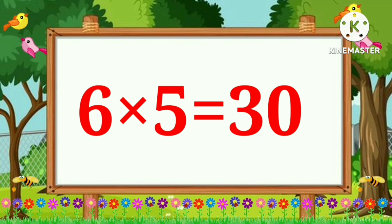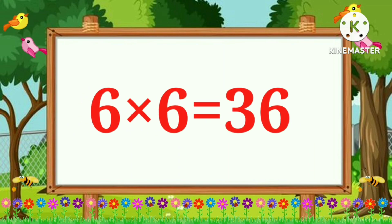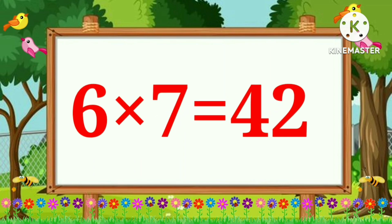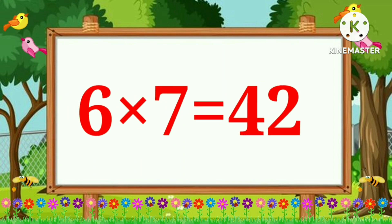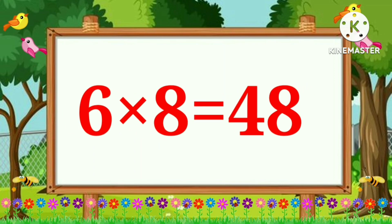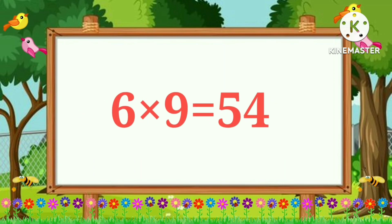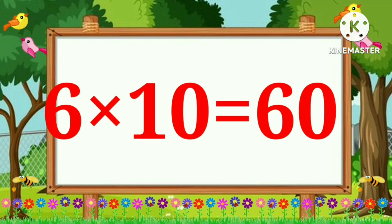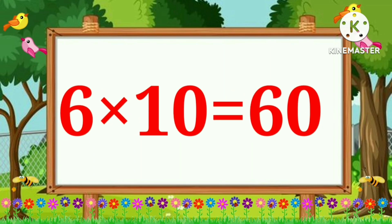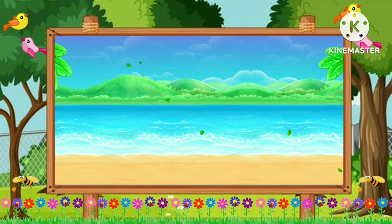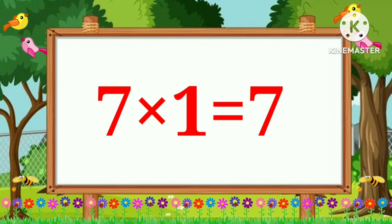Six fives are thirty. Six sixes are thirty-six. Six sevens are forty-two. Six eights are forty-eight. Six nines are fifty-four. Six tens are sixty.